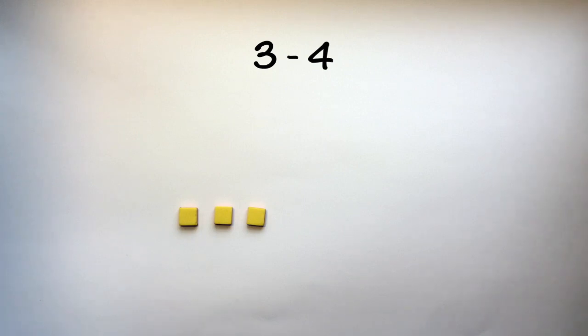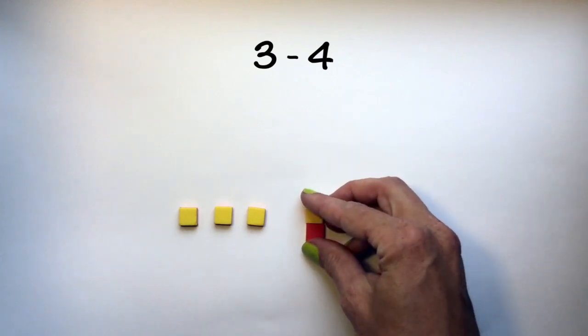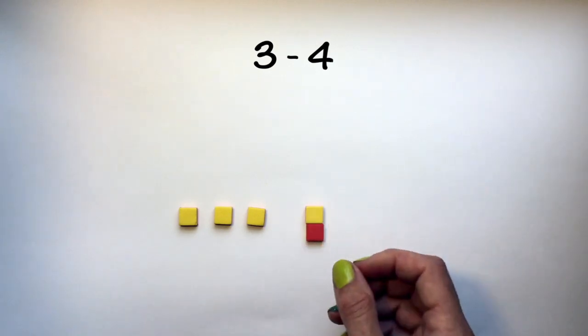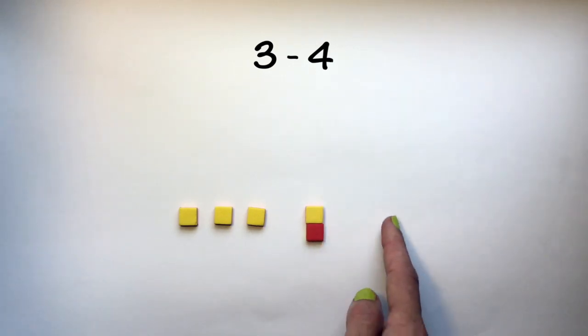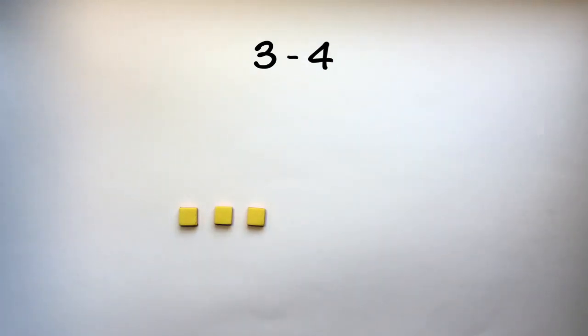So what I could do is add a zero pair. Now remember this means zero because positive 1 and negative 1 together make zero. So the value here is still 3 even though we have four positive tiles because we have that negative tile that cancels one of those positive tiles out. So this is 3 and this is also 3.